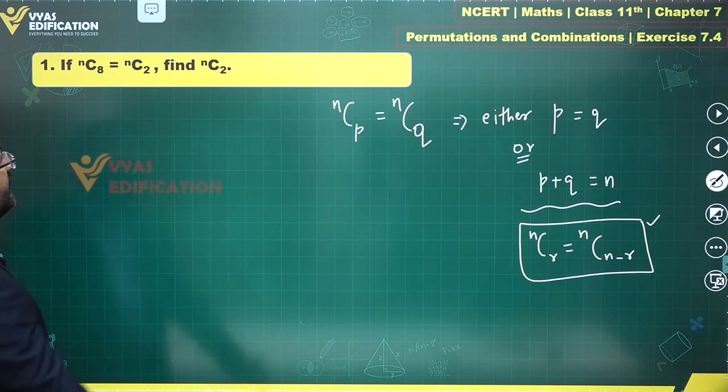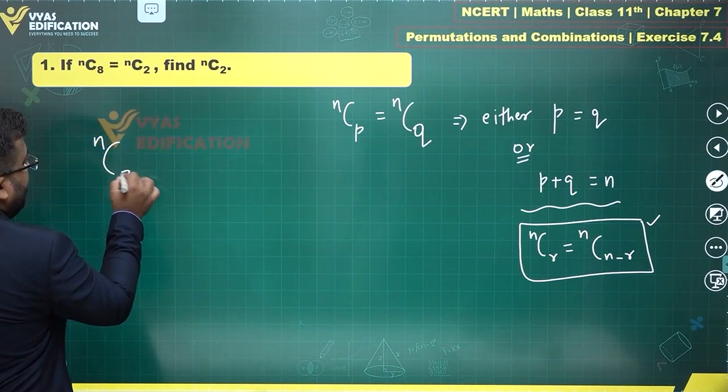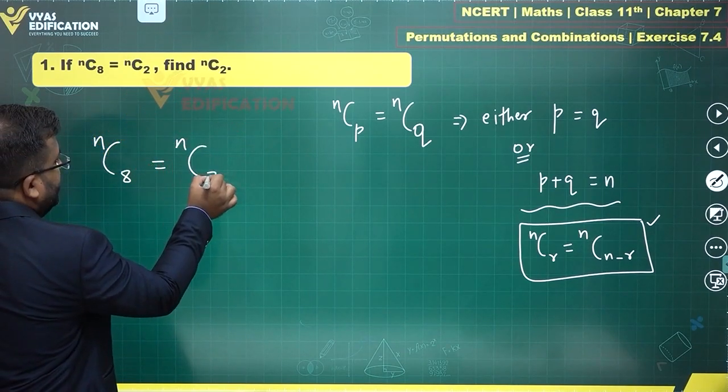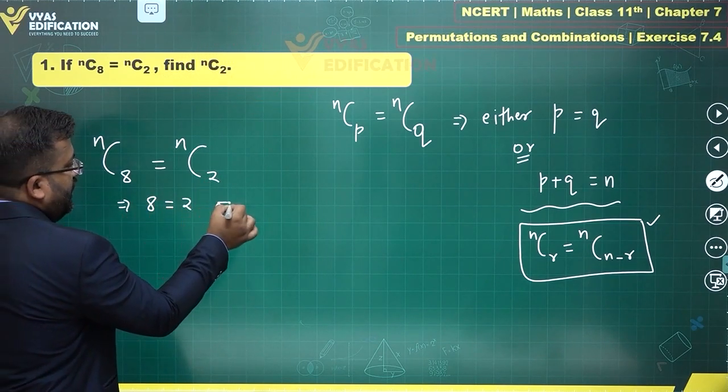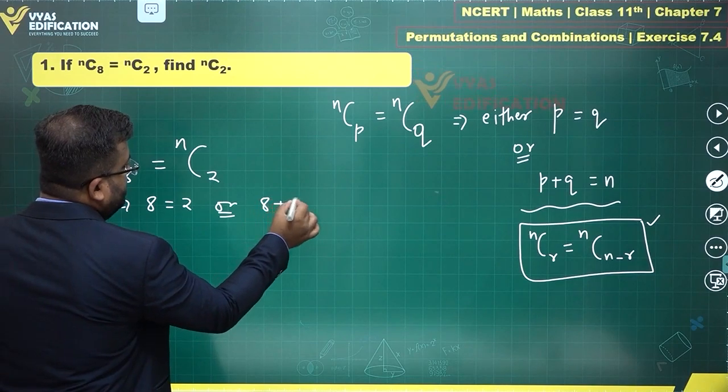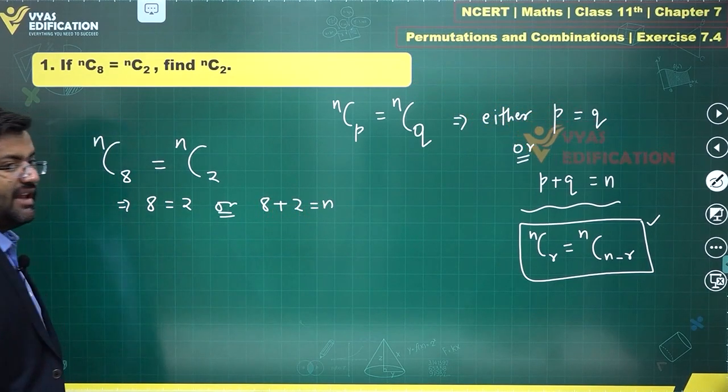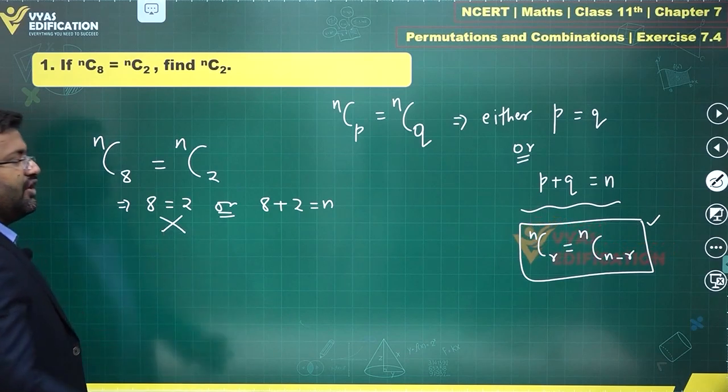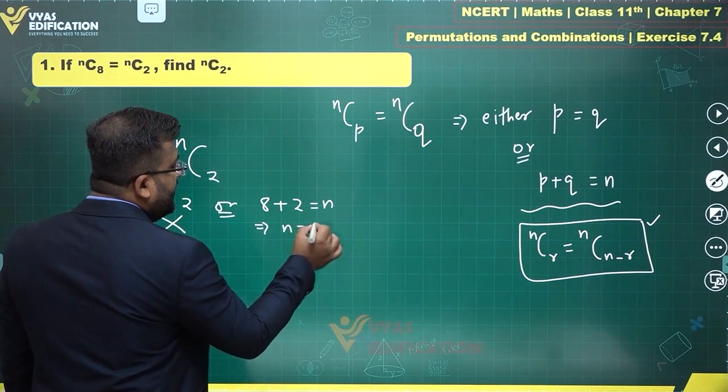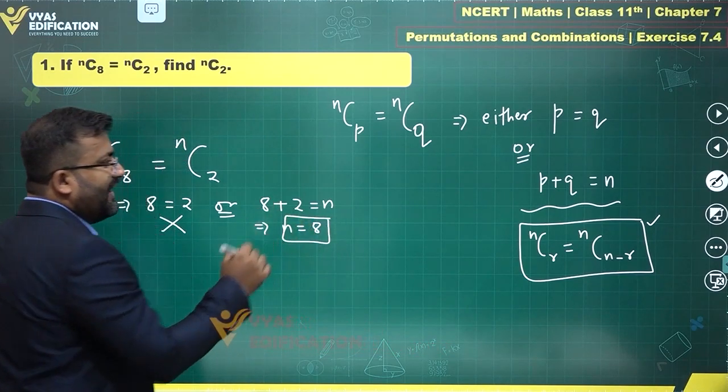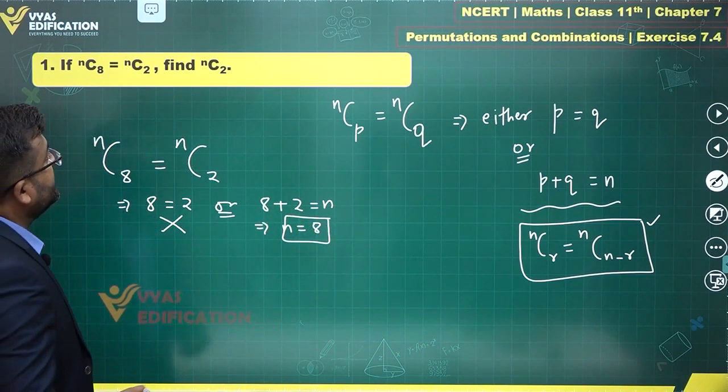Let's apply that concept. NC8 equals NC2 implies that either 8 equals 2, or 8 plus 2 equals N. Since 8 is not equal to 2, we can observe that N will be equal to 8. Once we find N, the next thing asked is NC2.